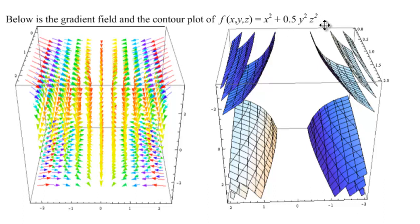Of course, the graph of this function would actually be in four dimensions, so we can't do it. So we tried to find other representations. I put up the contour plot, and here is another depiction of the gradient field. You can kind of see it's normal to the contour plot.